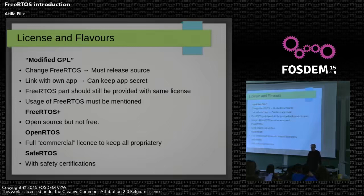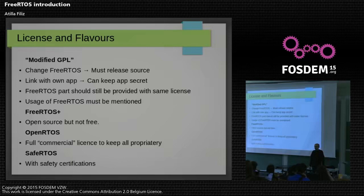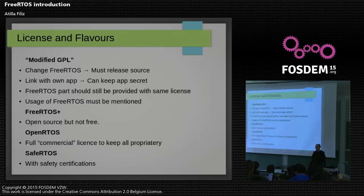There is an addition called FreeRTOS Plus, which adds bells and whistles like UDP support, command line processing, and some convenient IO functions. It's available as source, but if you want to use it commercially, you can buy a license from the supporting company. Also, if you need to make proprietary changes to the operating system itself, you can buy a license to the ironically named OpenRTOS so that you can keep your code closed. There is also a flavor called SafeRTOS from the same company, which is for things like automotive applications where you need safety licensing and safety certification.